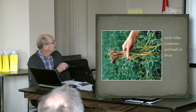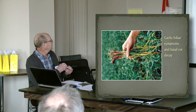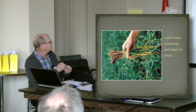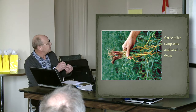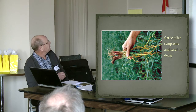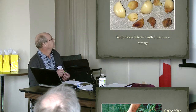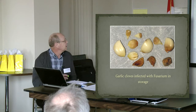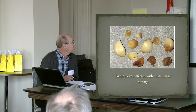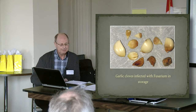You get the yellowing and dieback of the foliage, and if you examine the base, you've lost the roots — it's gone into the basal plate, so water and nutrients can't get up to the upper part of the plant. This is fusarium rot of garlic cloves that has occurred in storage.